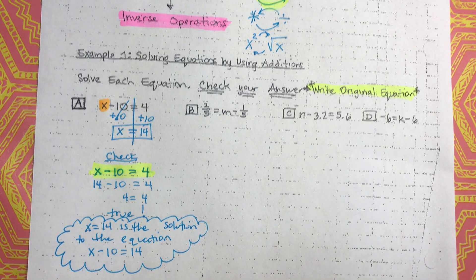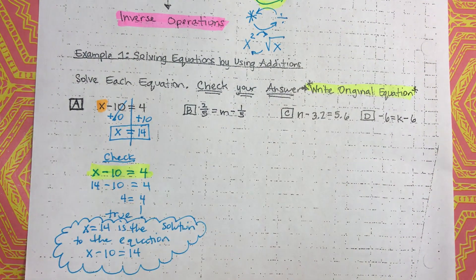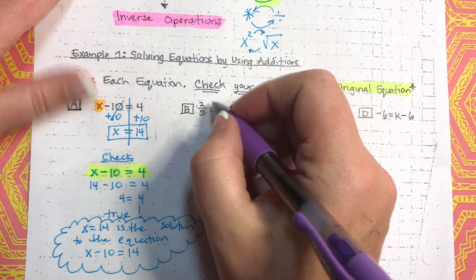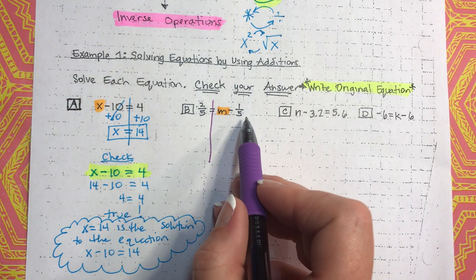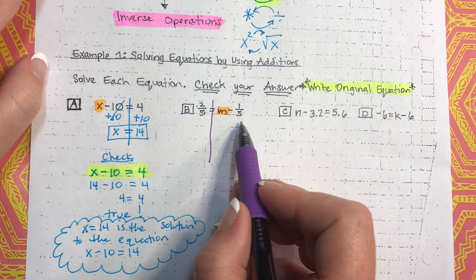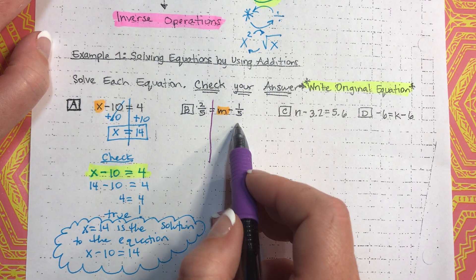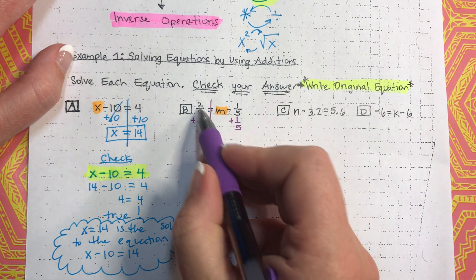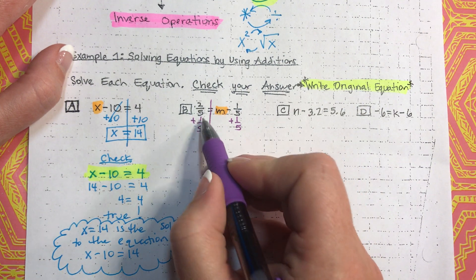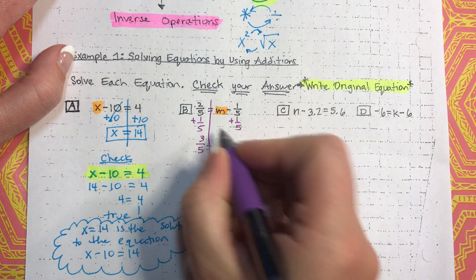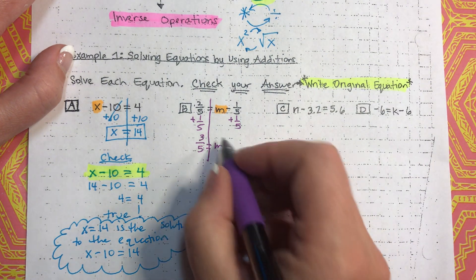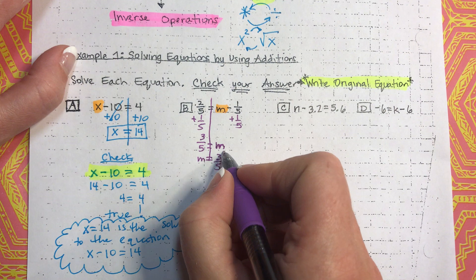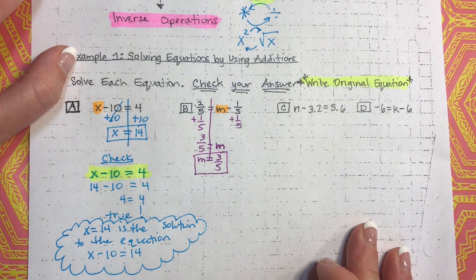Let's move on to the next one. We're trying to get m by itself and isolate that variable m. Is m by itself? No, there's a negative one-fifth. So, we need to get rid of that negative one-fifth using inverse operations. We're going to add one-fifth to both sides. One-fifth plus two-fifths — they have a common denominator, so we just add the numerators: two plus one is three. So, three-fifths equals m. That is our solution.